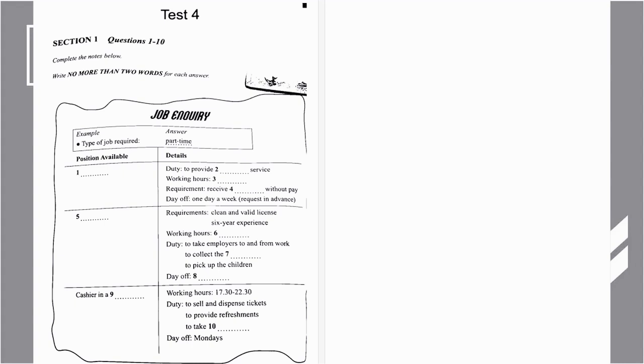You will see that there is an example that has been done for you. On this occasion only, the conversation relating to this will be played first. The type of work the woman is looking for is a part-time job. So, part-time has been written in the space. Now we shall begin. You should answer the questions as you listen, because you will not hear the recording a second time.